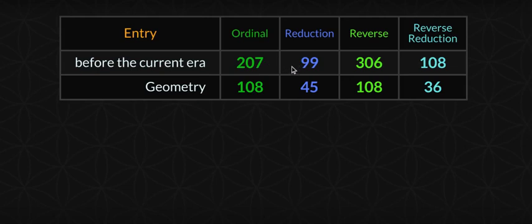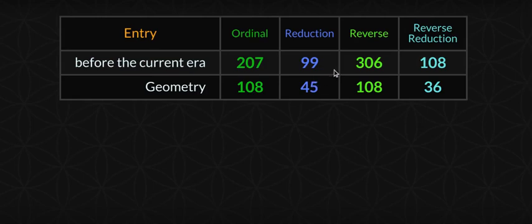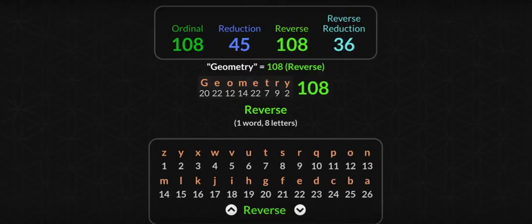Nine times two is 18. This is just how my mind works. Nine times four right here is 36, nine times five you get 45. I love it y'all — Math2Con.